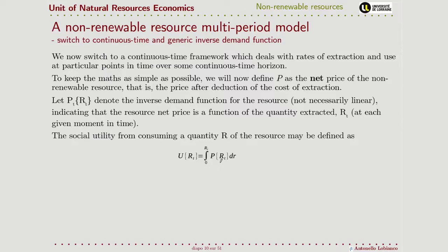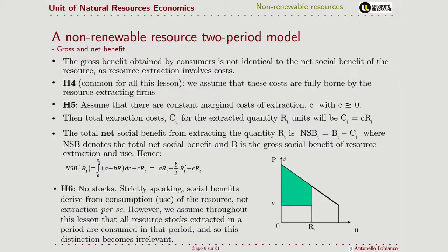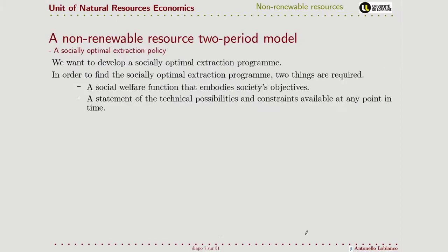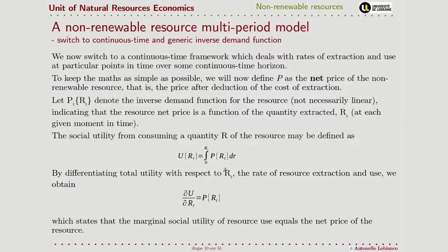In terms of the net price, if we go back a bit, when we consider the net price, the price net of extraction cost becomes the area we are considering from here to here. So if we differentiate both sides with respect to the extraction of the natural resource, we end up with the condition for maximization: the marginal social utility of the resource must be equal to the net price.